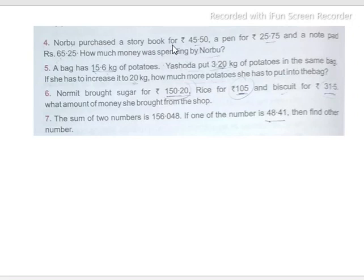Narbu purchased a storybook, a pen, and a notebook. So the total money spent by Narbu will be the sum of all this money.